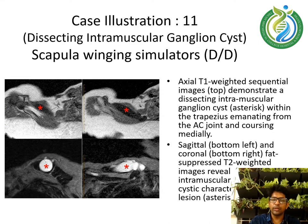Case illustration 11 — Dissecting Intramuscular Ganglion Cysts. Axial T1-weighted sequential images on the top demonstrate dissecting intramuscular ganglion cysts within the trapezius, emanating from the AC joint and coursing medially. Sagittal and coronal fat-suppressed T2-weighted images on the bottom reveal the intramuscular position and characteristics of the lesion.